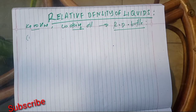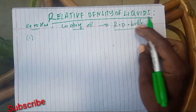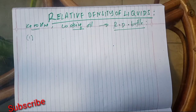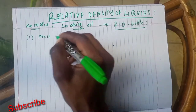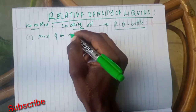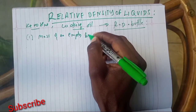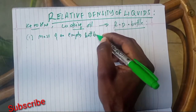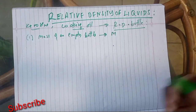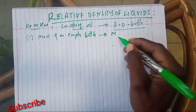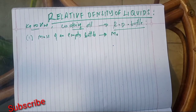First of all, you measure the mass of the bottle — that is, the mass of an empty bottle. This is measured and taken as M1 or M0. So this is M0, the mass of an empty bottle.